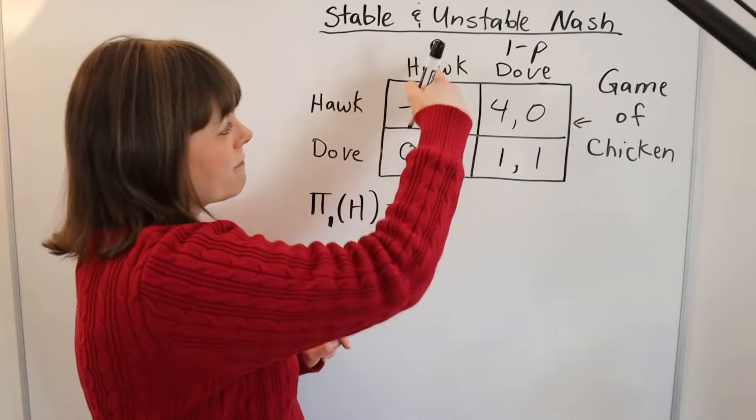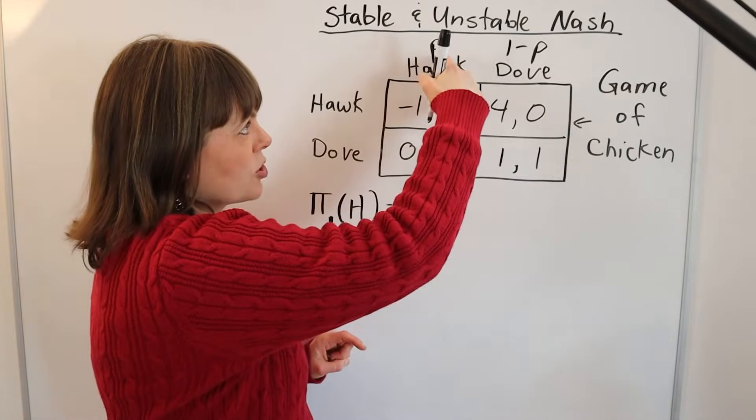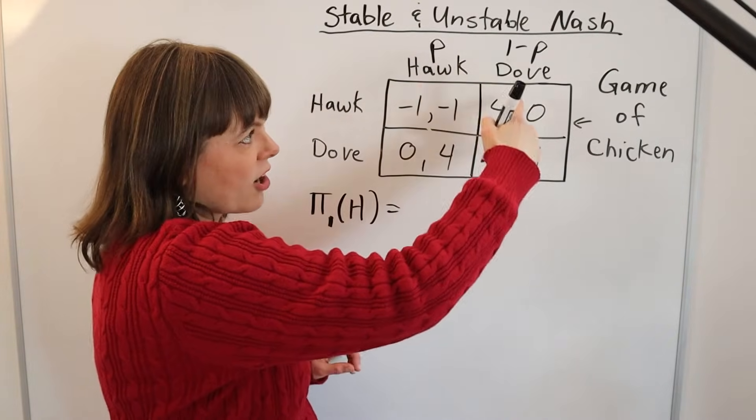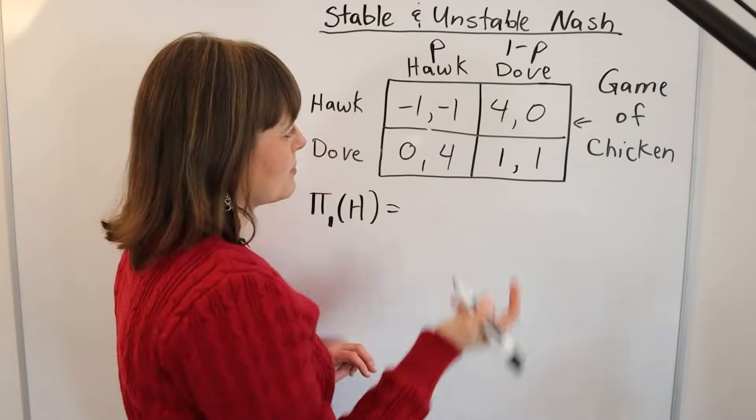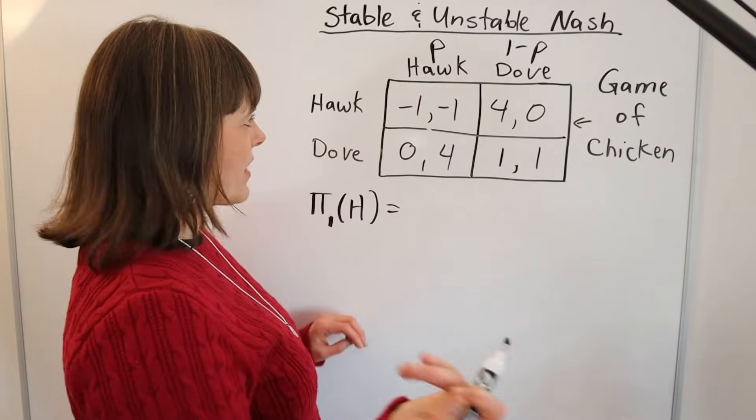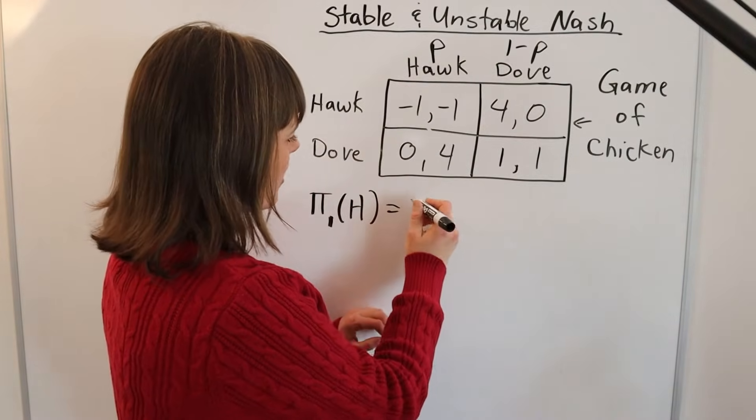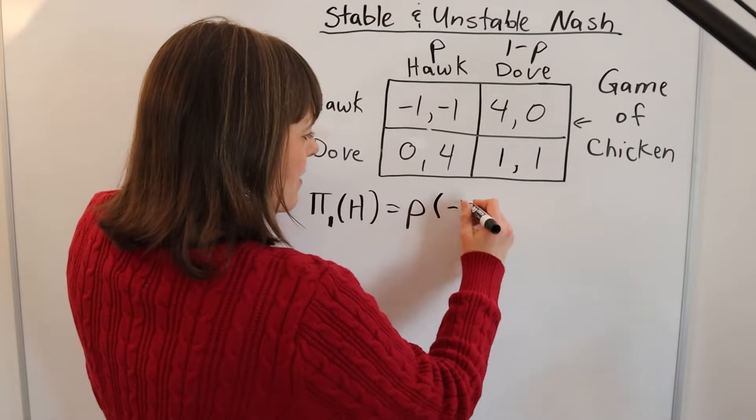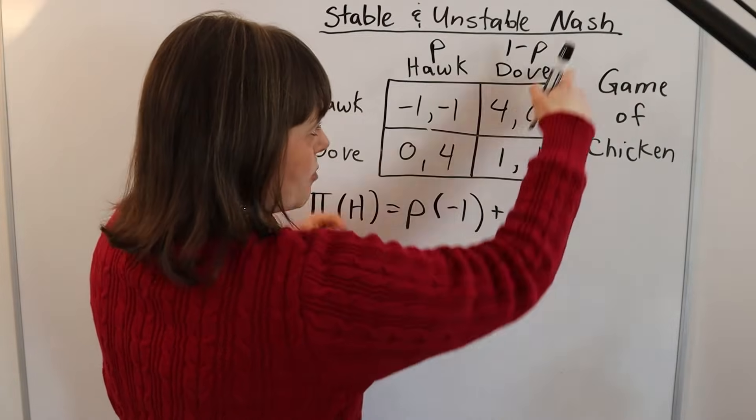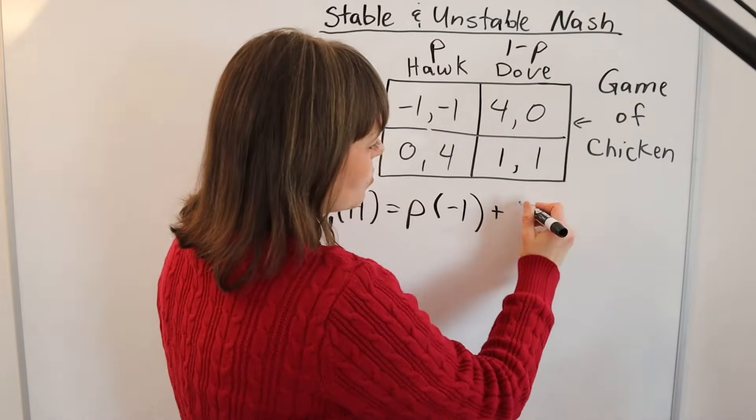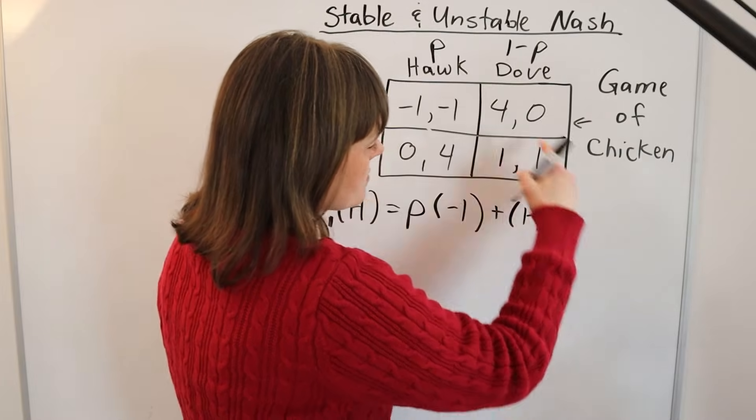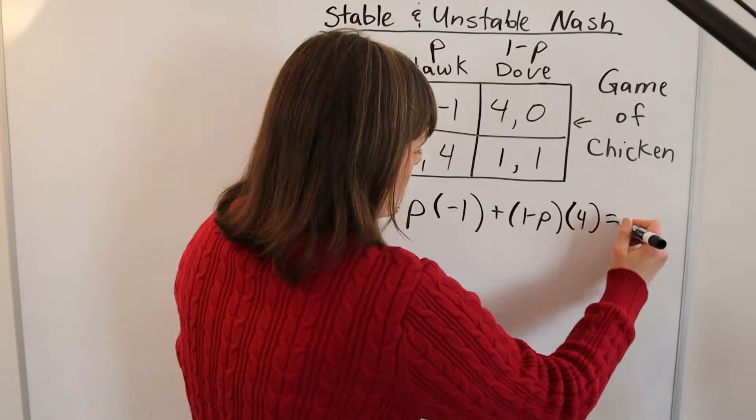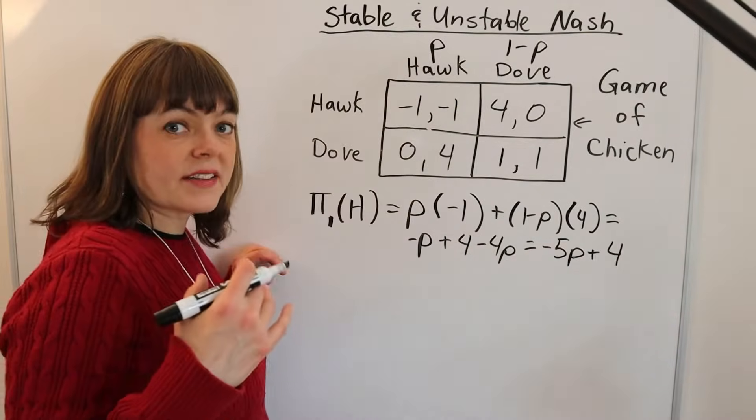What's their payoff from going Hawk if the other player, player two, mixes between Hawk and Dove with probability P going Hawk and probability 1-P going Dove? The payoff is: probability of going Hawk is P, payoff to going Hawk for player one is -1, plus the probability of the other player going Dove is 1-P times the payoff if the other player goes Dove, which is 4.